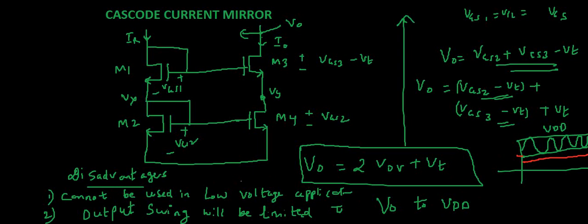These are the disadvantages of this cascode current mirror circuit. So you can try if the voltage is not maintained at this level, then these won't operate as expected in theory. You can try and simulate.